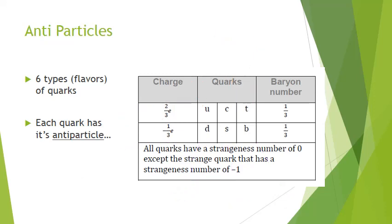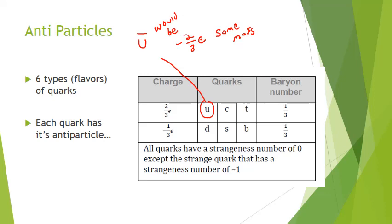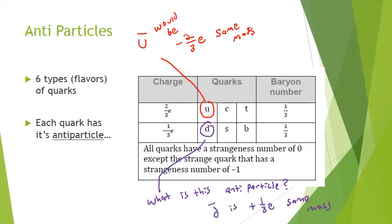Each quark has its antiparticle. For instance, the anti-up quark — denoted with a bar on top — would have a charge of negative two-thirds E (not positive two-thirds E) and has the same amount of mass. Pause and try: what would the antiparticle of the down quark be in terms of charge and mass? You should get a charge of positive one-third E and the same mass as the down quark.